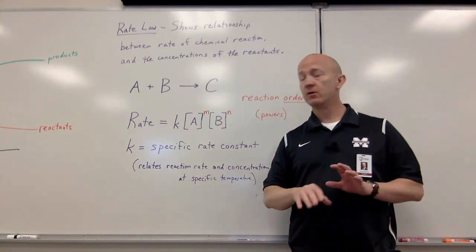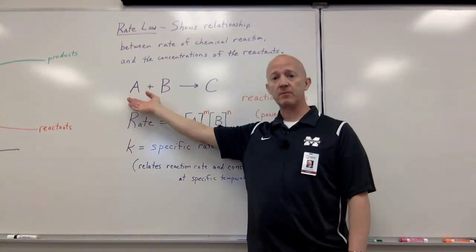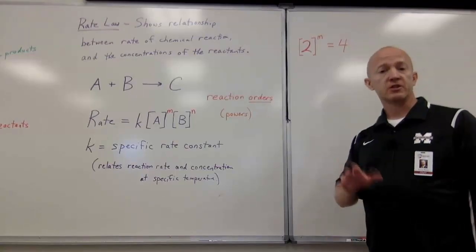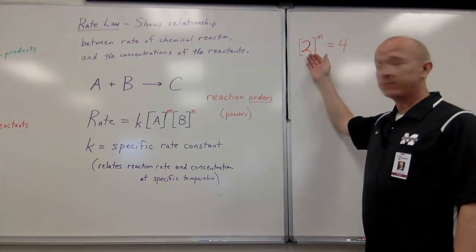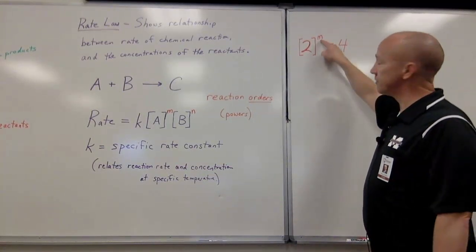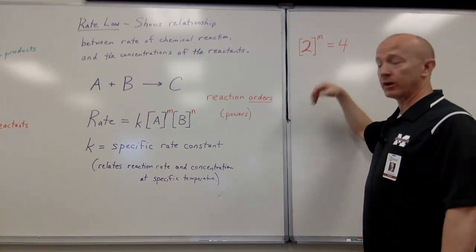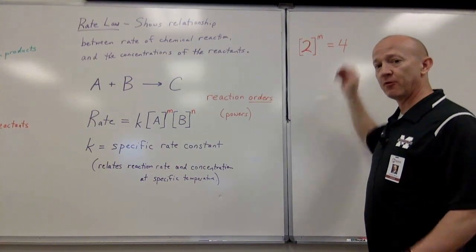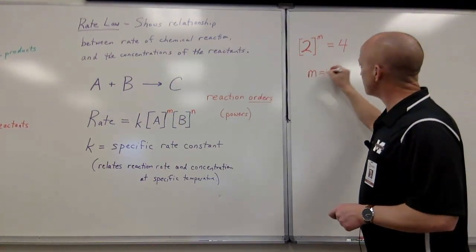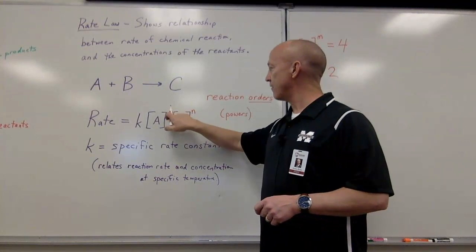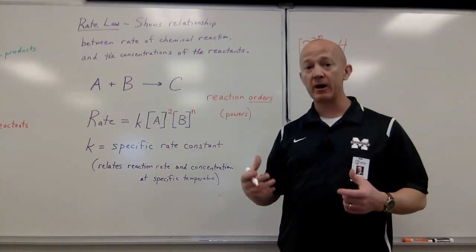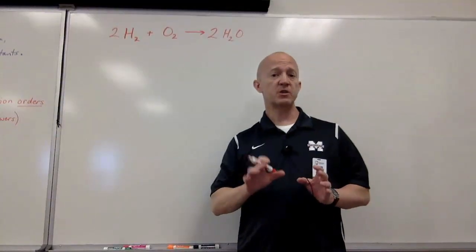But what if it's not first order? What if I double A and the rate quadruples? Then I may have to use reaction orders — you can think of them as powers or exponents. For example, if I double my concentration of A and my rate of reaction increases by a factor of four, I can set it up as: 2 to the mth power equals 4, so m equals 2. Whatever I do to A, the result is that the reaction rate is squared.